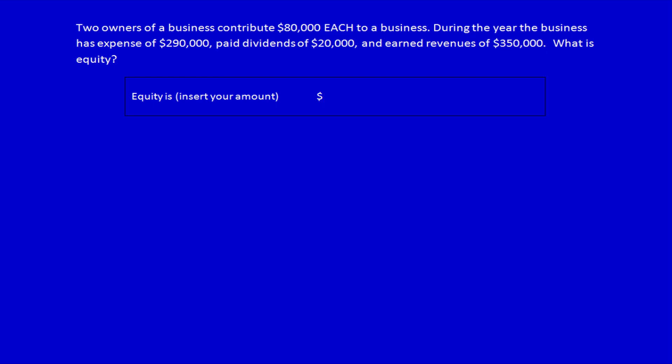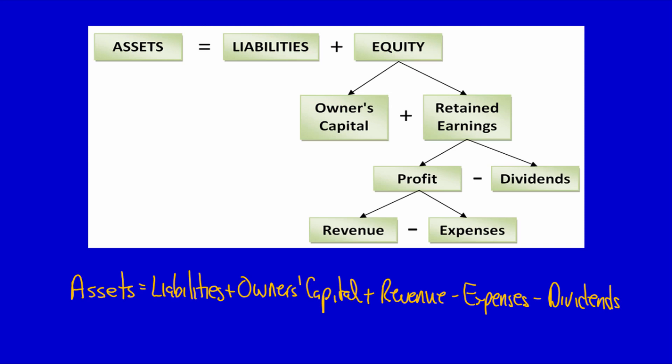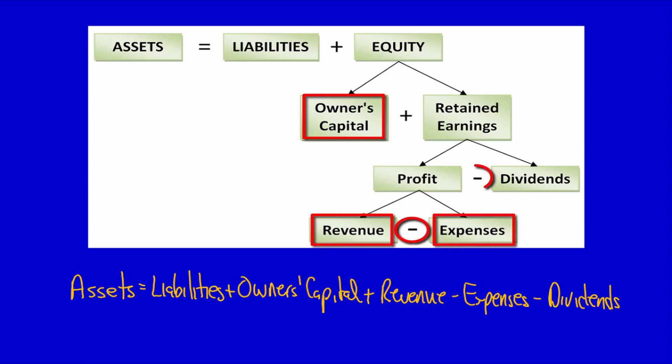The easiest way to solve these questions is to use a matrix. Let's go back to the flowchart for a second. Remember that assets are equal to liabilities plus equity. Underneath equity is the owner's capital and retained earnings, and underneath retained earnings is profit and dividends, and underneath profit is revenue and expenses. So equity is equal to owner's capital plus revenue minus expenses minus dividends.